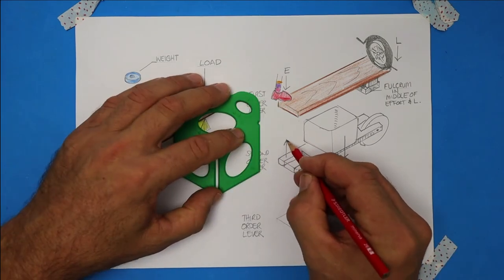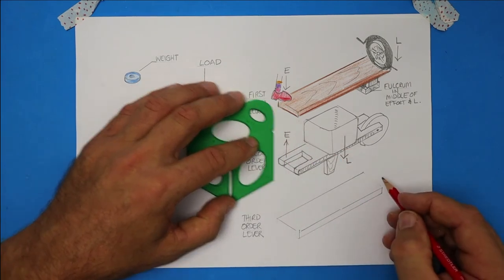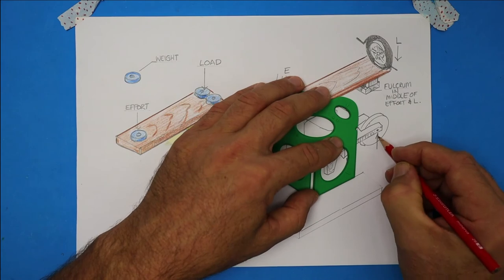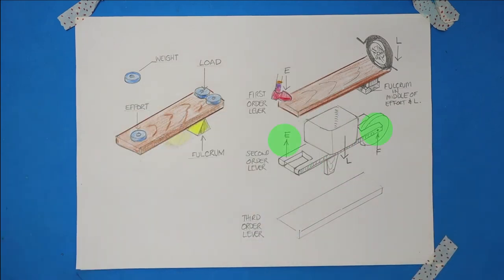OK, so there's the effort from the handle and the fulcrum at the front. Now let's analyze this. In between the effort and fulcrum, we have the load. So for a second order lever, the load is always in the middle.